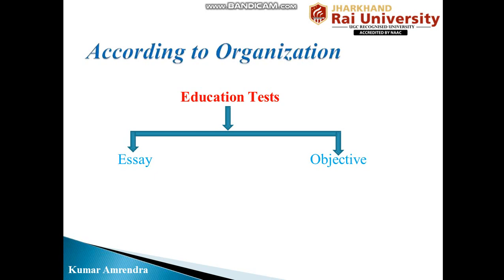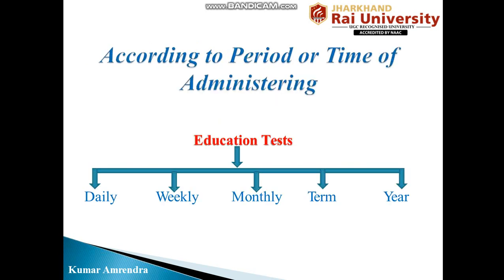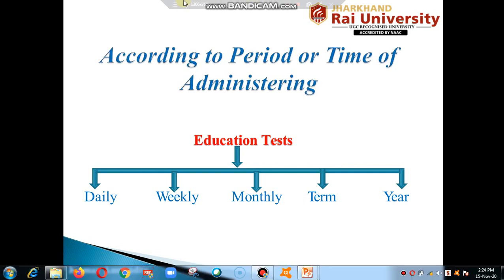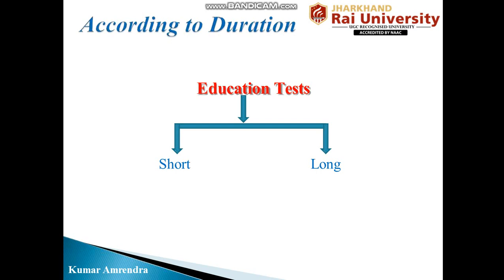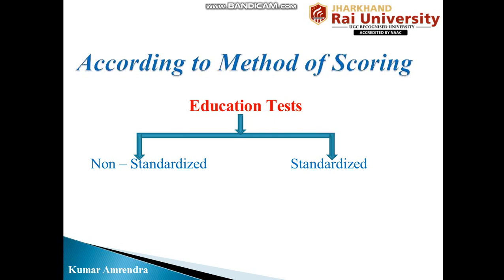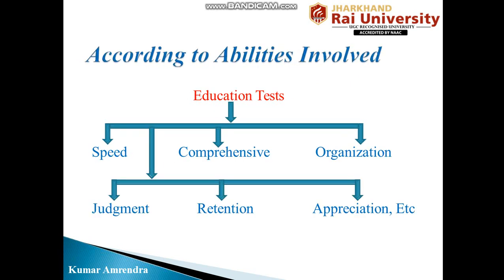According to organization, the education test must be of the essay type or objective type. According to the period or time of administering, the education test can be on a daily basis, weekly, monthly, within a term, or in a span of a year. According to duration, it can be a short test or a long test. According to method of scoring, it can be non-standardized or standardized. According to abilities involved, it can be classified by speed, judgment, retention, appreciation, comprehension, and organization.